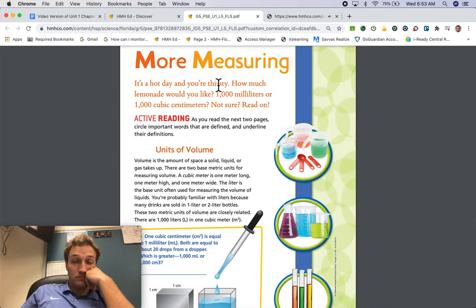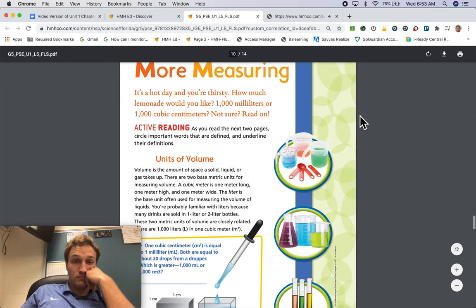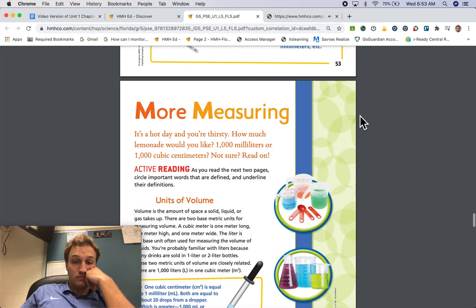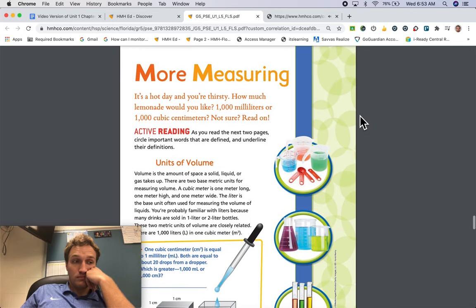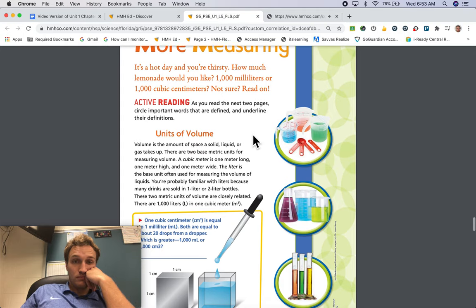More measuring. It's a hot day and you're thirsty. How much lemonade would you like? 1,000 milliliters or 1,000 cubic centimeters? Not sure? Read on. Active reading. As you read the next two pages, circle important words that are defined and underline their definitions.